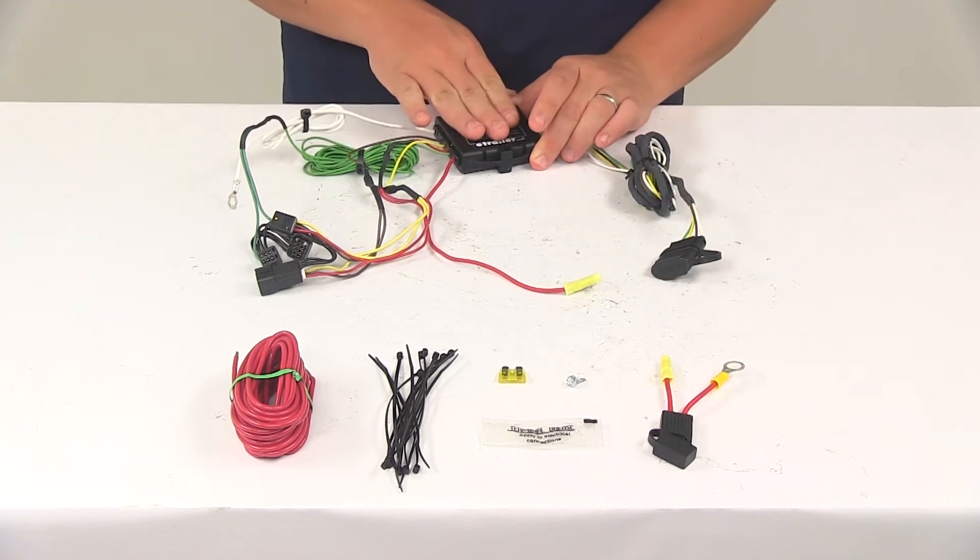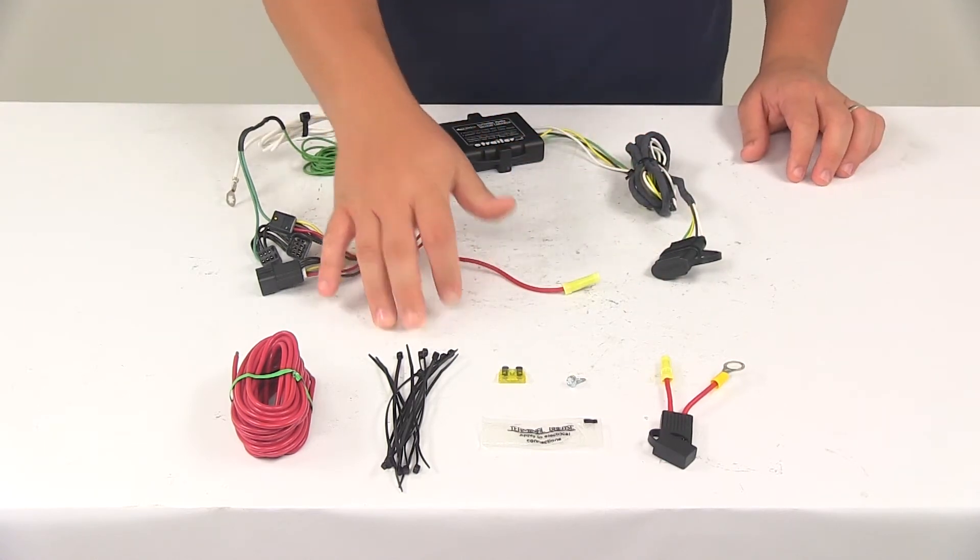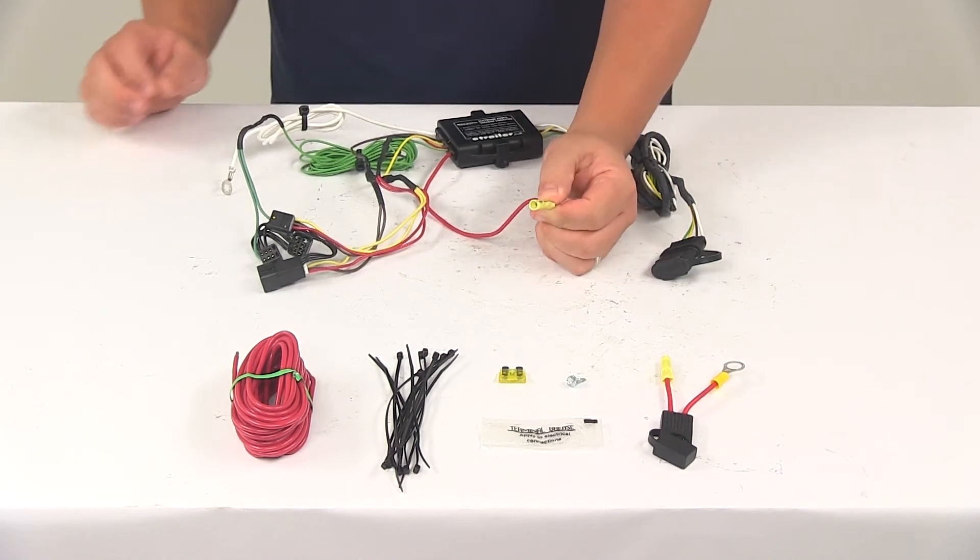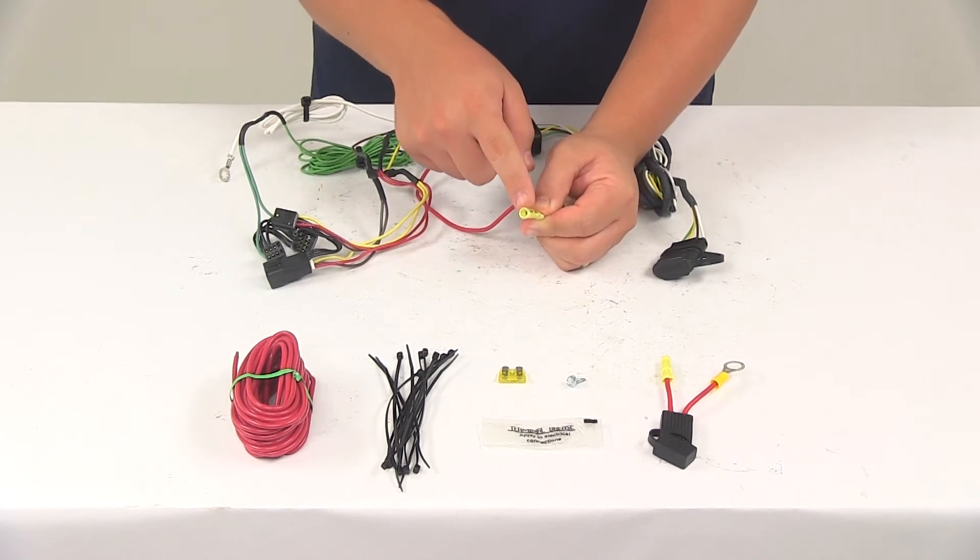And then you'll need to mount your converter box with the included cable ties. Then you can run the hot lead to the vehicle battery. The hot lead is the red wire with the buck connector on it, coming out of the black box here.